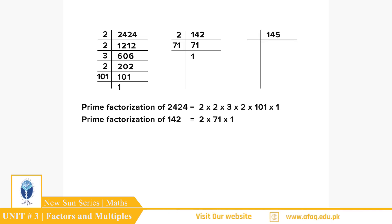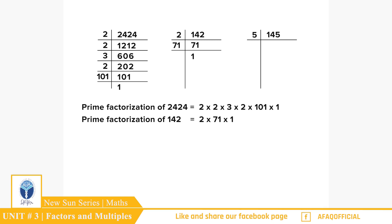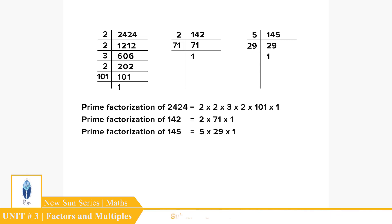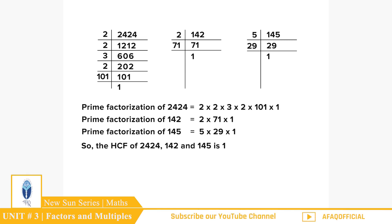145 کے prime factors: 145 کو 5 پر divide کیا تو 29 آیا، 29 کو 29 پر divide کیا تو 1 آیا۔ اس طرح 145 = 5 × 29 × 1۔ اب ان تینوں numbers کا HCF معلوم کریں — HCF = 1۔